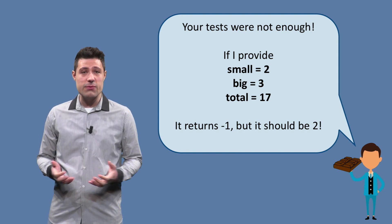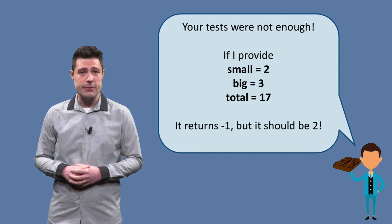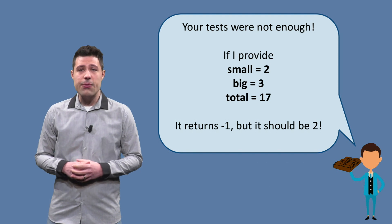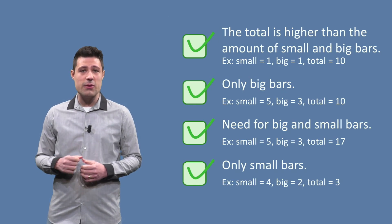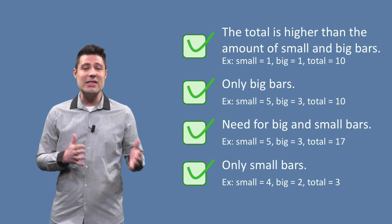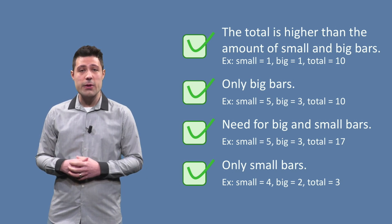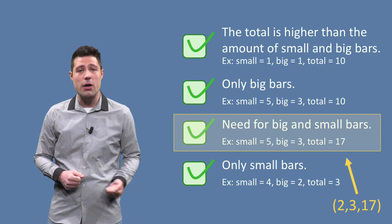So we didn't test enough, we were not able to find the problem. If we think again about the four partitions we have, we see that the input that generates the bug, 2, 3, 17, belongs to the third partition: need for big and small bars.